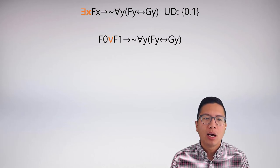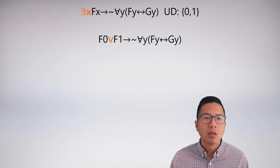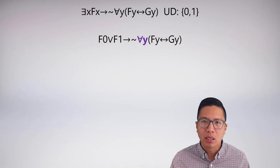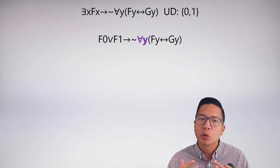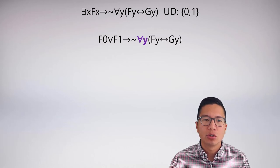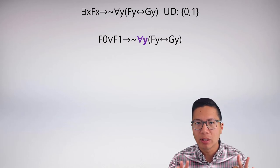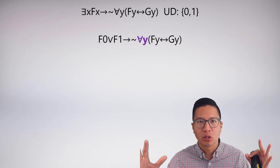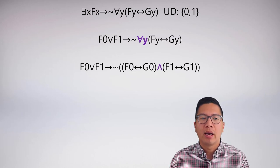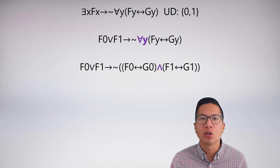Now I'm ready to expand the universal. You could have done the universal first, or both at the same time—here I've split them up so it's clear. The universal only modifies what's under its scope: Fy biconditional Dy. So I replace y with 0, put in a conjunction, and replace y with 1. Crucially, the negation stays outside the expansion because it doesn't fall under the scope of the universal. So the expansion has the negation on the outside, with F0 biconditional G0 and F1 biconditional G1 inside—and I've succeeded in a truth functional expansion.